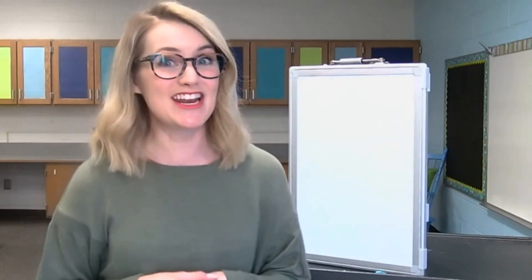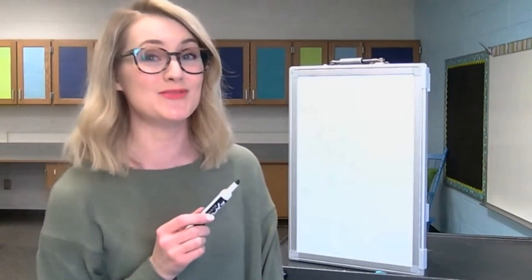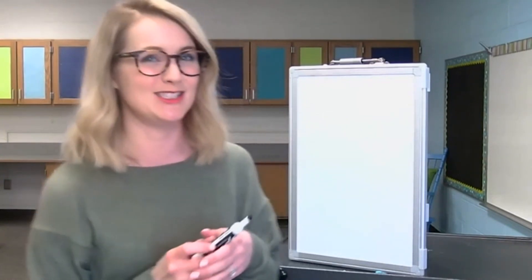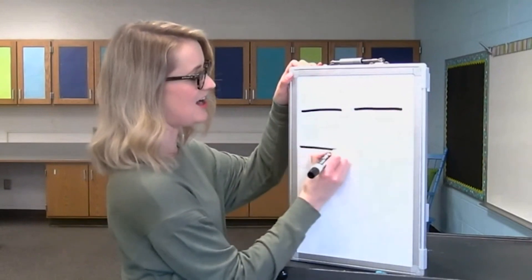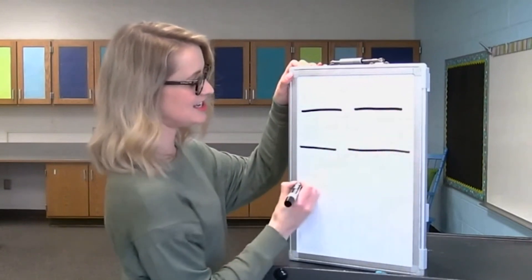Are you ready to write with me? Make sure you have something to write on so you can write that sentence. Now, before we start writing, let's clap out those words to get our brains ready to write. Clap it out with me: Mary had a pet lamb. Let's count out those words — Mary had a pet lamb. There are five words in that sentence. Now, before we start writing the words, let's draw some lines on our paper to remind us that there are spaces between our words: Mary had a pet lamb.